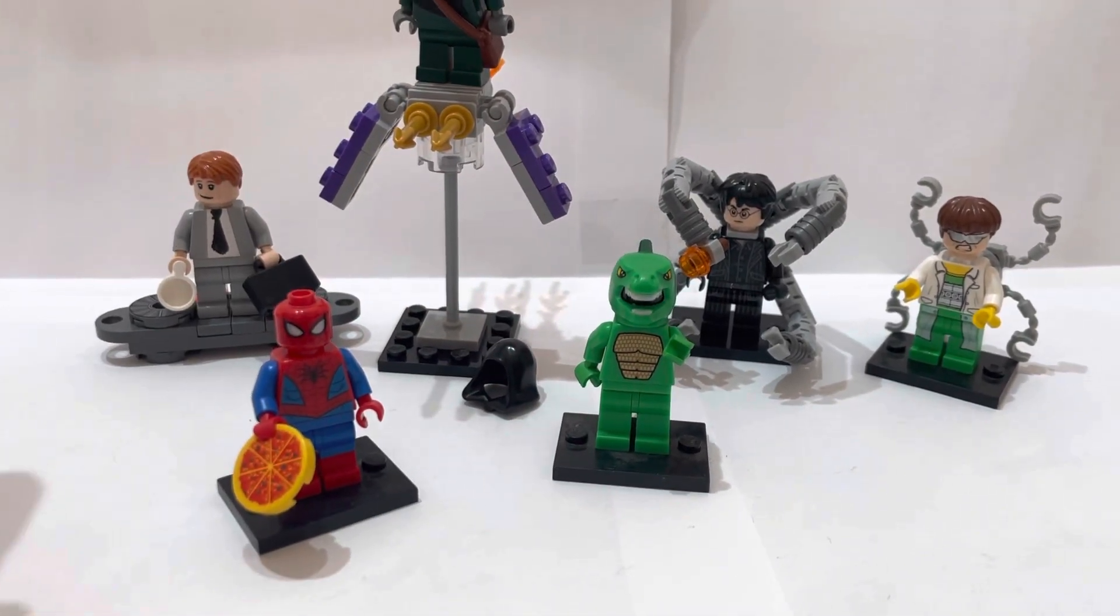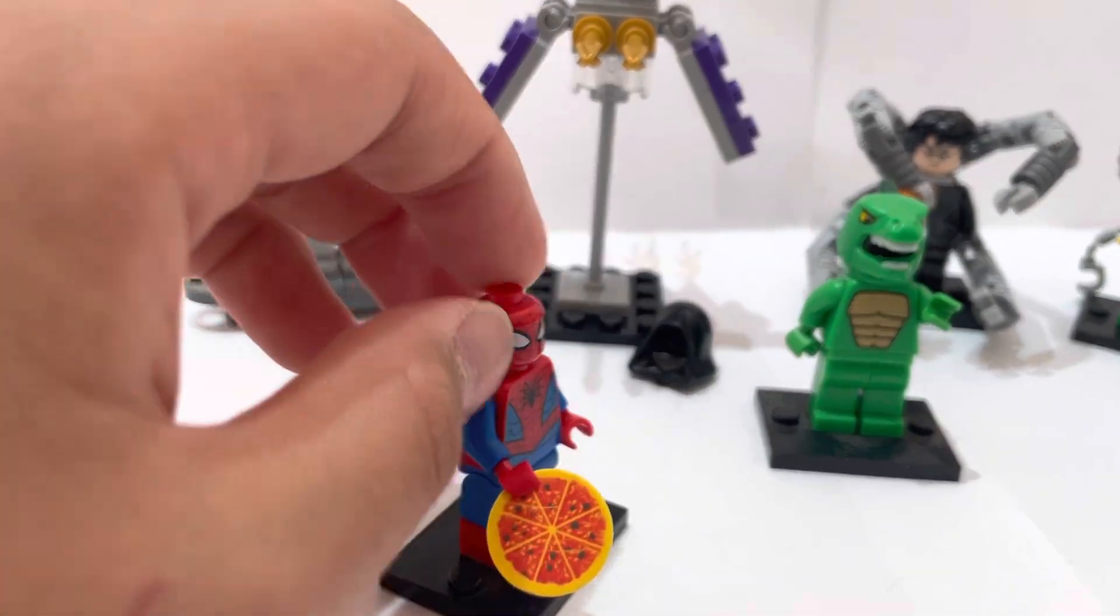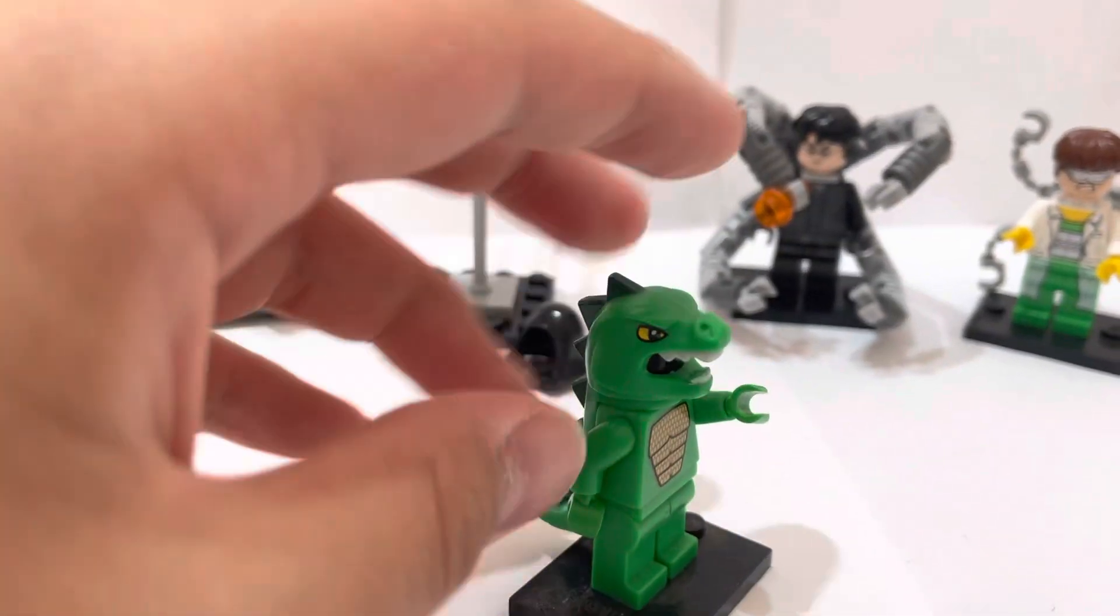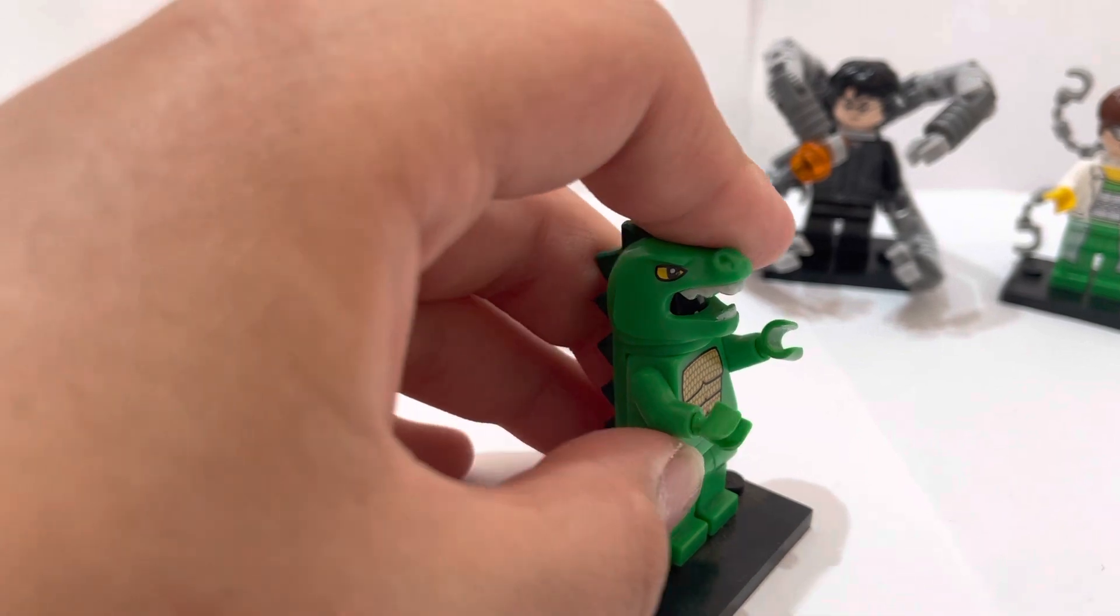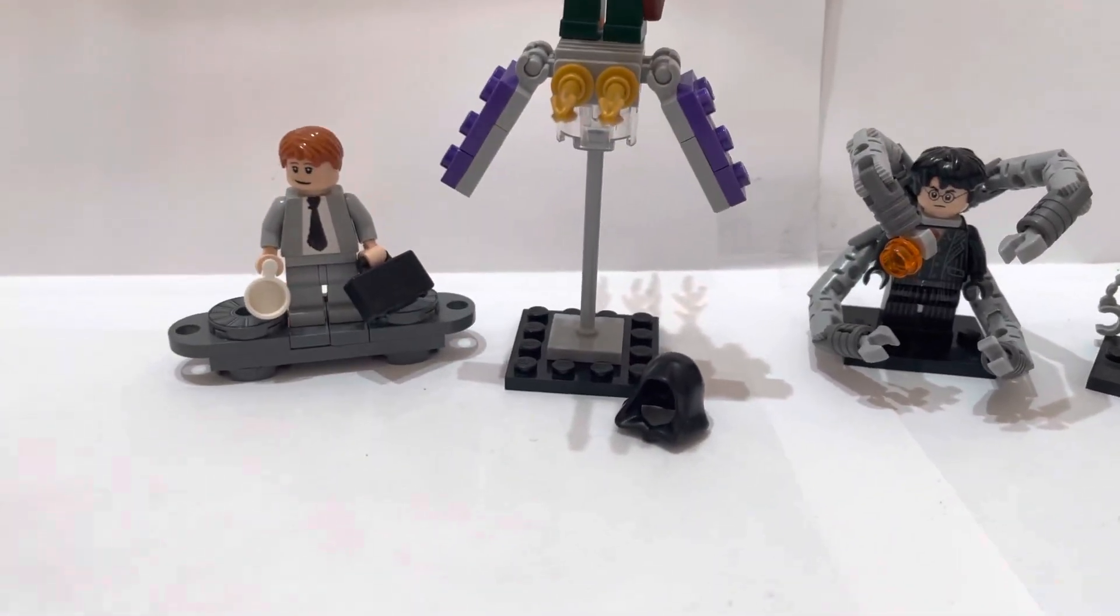Let me just show you. We've got basic Spider-Man with a little New York pizza. Then we've got the Lizard from the Amazing Spider-Man. And now we've got Harry Osborne with the glider, the hoverboard.